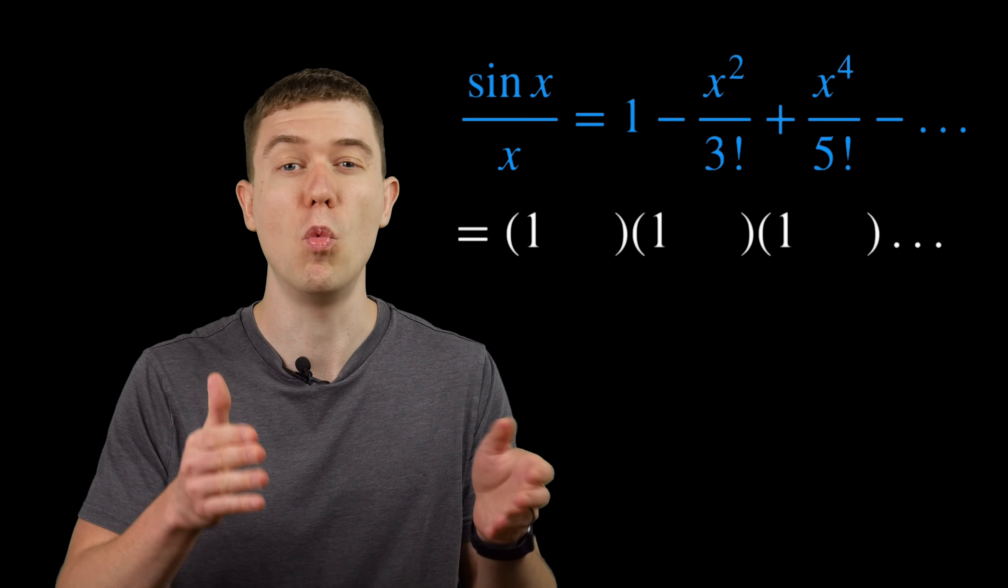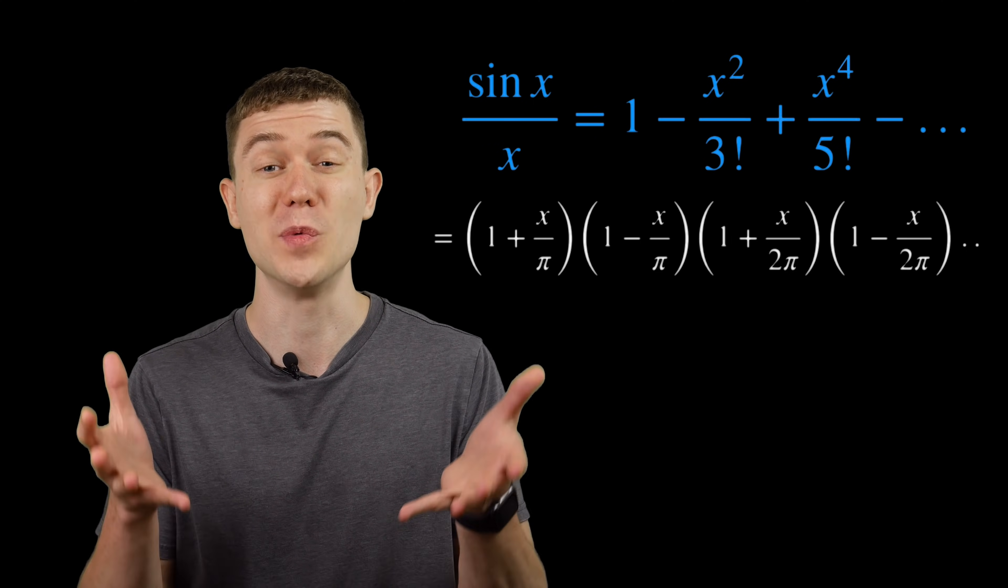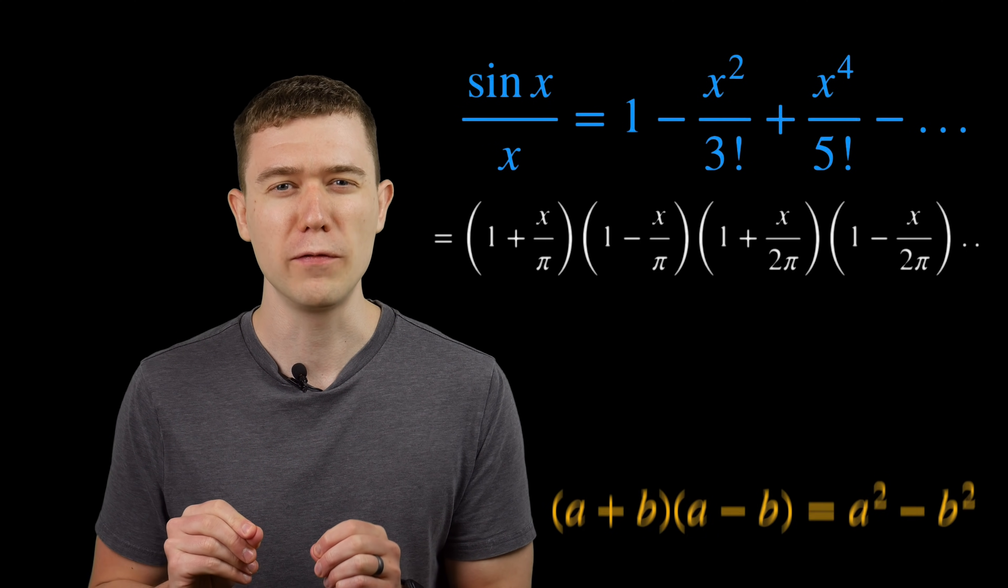The way that we do that is make it 1 minus x over the root for all of the roots. And so we have the factorization here.